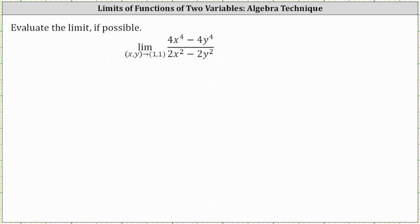We're asked to evaluate the limit if possible. We have the limit of 4x to the fourth minus 4y to the fourth divided by the quantity 2x squared minus 2y squared, as x,y approaches 1,1. Notice at the point 1,1 we have division by 0 — also the indeterminate form 0/0. This does not mean the limit does not exist; it just means we can't find the limit by performing direct substitution with the function in this form.